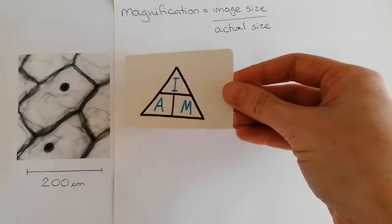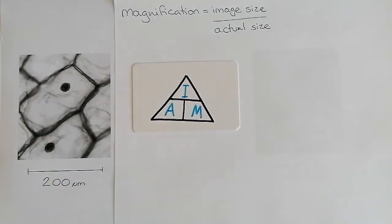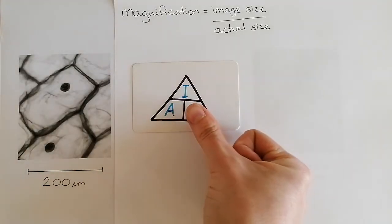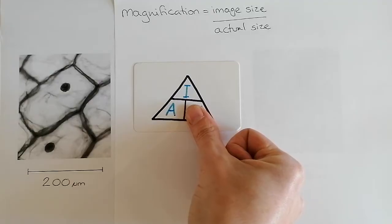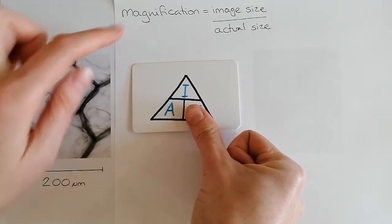Now, we can change this into a formula triangle that you should be familiar with. So we would have image size at the top, over the actual, and over magnification. If we want to find out magnification, we cover the one that we don't know, and we are left with image size over actual size, which is what we've already got written up here.